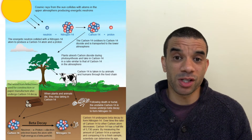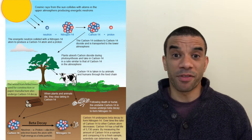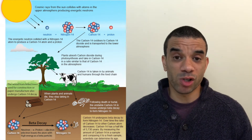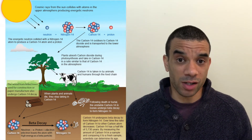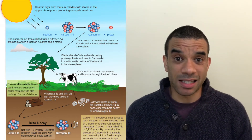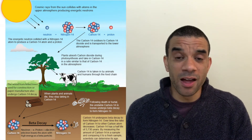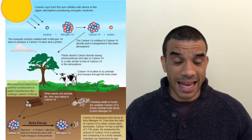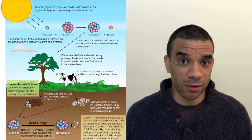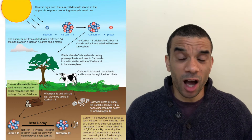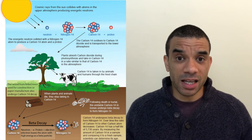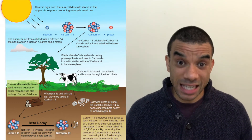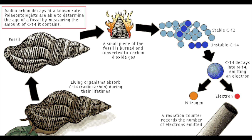Plants are then eaten by animals and taken up into the animal tissues. Both animals and plants respire — they give off carbon dioxide, so they're releasing some of this carbon. But when they die, they don't take any more up and they don't release any themselves. So whatever carbon is in their tissues, that's the carbon that stays. You can calculate how much carbon-14 is left in their tissues and then calculate when exactly the organism died.